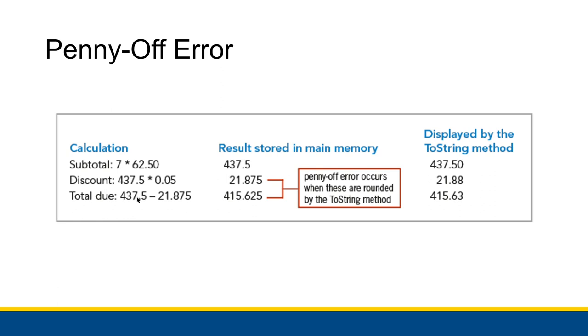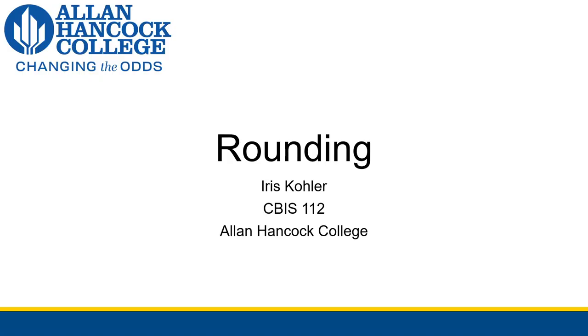And then the total due you also won't have to worry about, because you have an at most two decimal point number for the subtotal minus an at most two decimal point number for the discount, which then will be at most two decimal points for the total due. So that's how you can fix the issue using Math.Round. All right, that is the very quick aside on rounding. Now let's get back into procedures.